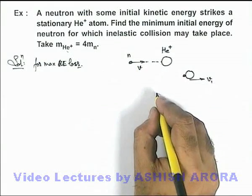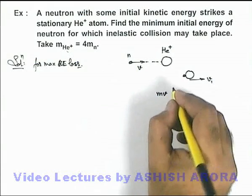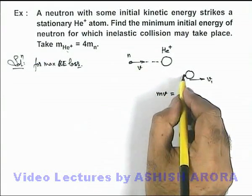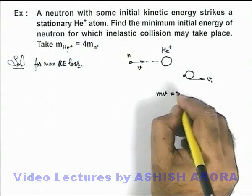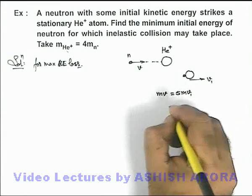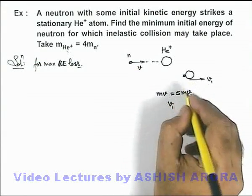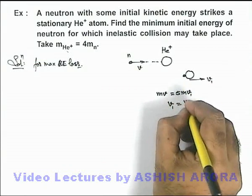We can simply write here initial momentum was mv, and final momentum is mass of neutron as m and that of helium we can take as 4m, so it will be 5mv1. This will give us the final speed of combined system will be v by 5.